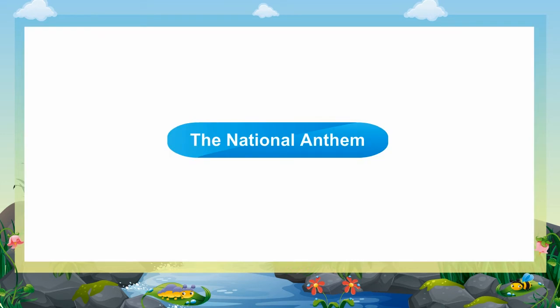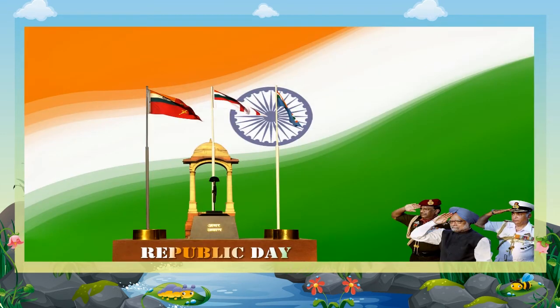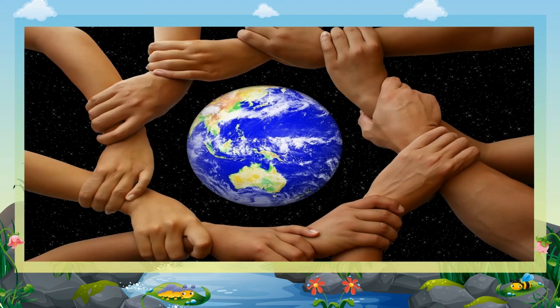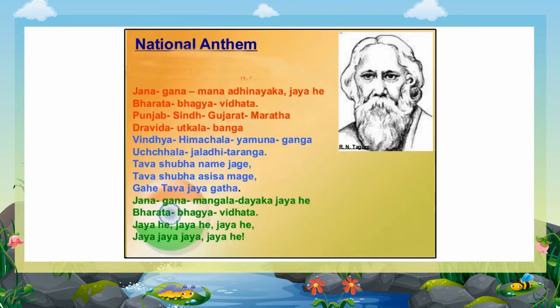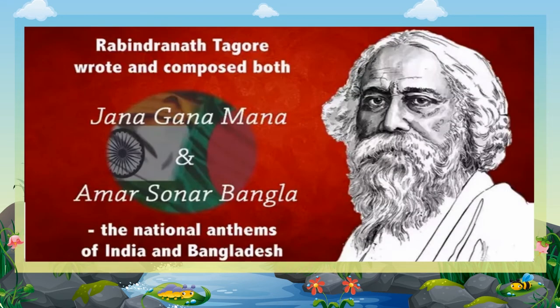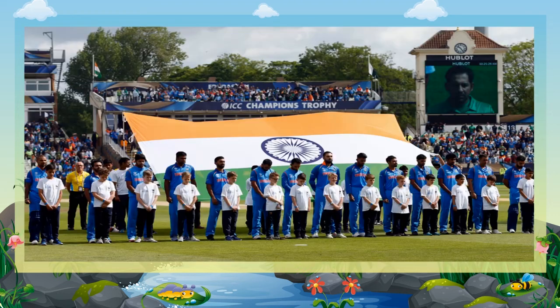Every free country has a national anthem. It is sung at national festivals and other important occasions. It symbolises a country's unity. Jana Gana Mana is the national anthem of India. It is written by Rabindranath Tagore. It is of interest that another poem by Tagore, Amar Shonar Bangla, is the national anthem of Bangladesh. The national anthem is generally sung in a group.